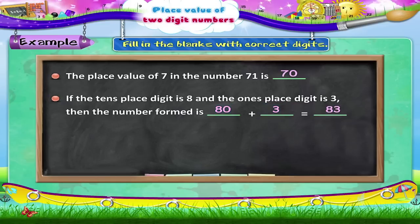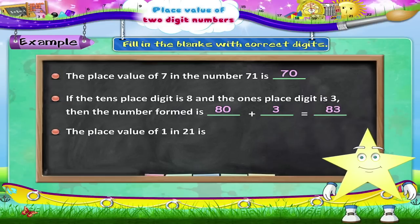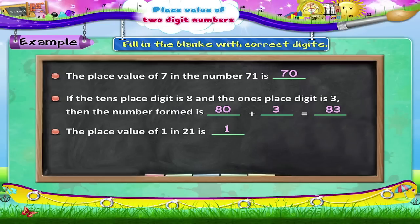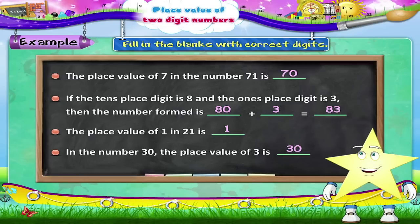Now the next one. The place value of 1 in 21 is blank. The answer is 1. Let us fill in the last blank. In the number 30, the place value of 3 is blank. The answer is 30. Did you understand? The value of a digit depends upon the place it is written in.